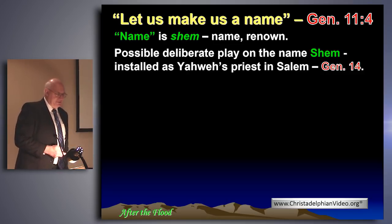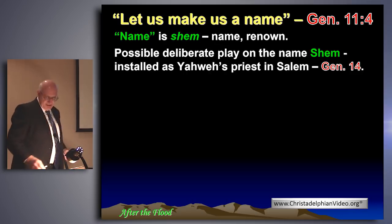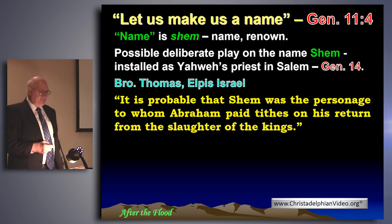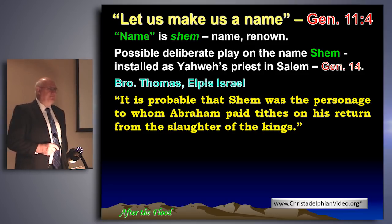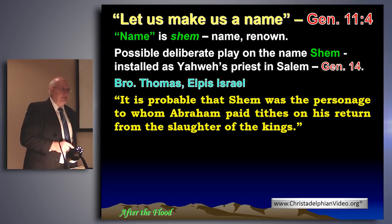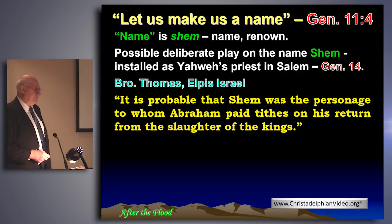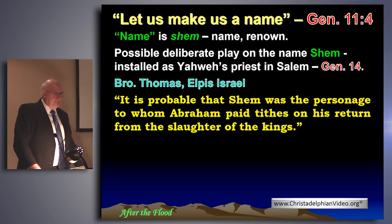Who was installed, of course — Shem? We believe, as Brother Thomas says in Elpis Israel, that Shem was Melchizedek, installed as Yahweh's priest in Salem, as Genesis 14:18 tells us. It is probable that Shem was the personage to whom Abraham paid tithes on his return from the slaughter of the kings. Paul makes a very important point in Hebrews 7: Melchizedek was made after the likeness of the Son of God — Melchizedek was set forth as a type, the Son of God being much greater than him.